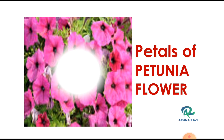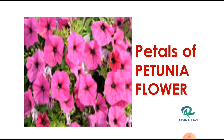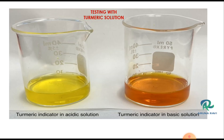You can see the petunia flower petals used as natural acid-base indicators. In turmeric solution, the acidic medium gives a yellow color, and the basic medium turns red. With lemon juice and soap water, you can observe these changes.